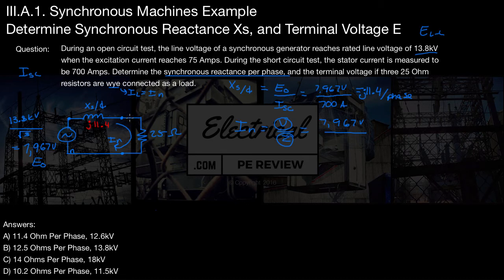So Z is actually going to be the sum of both. So that's going to be 25 plus j11.4 ohms.